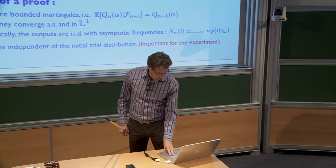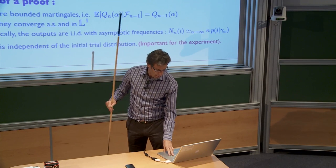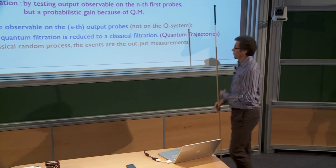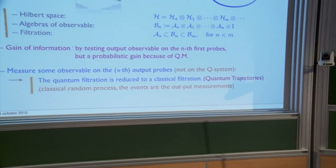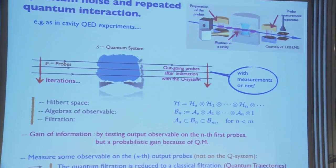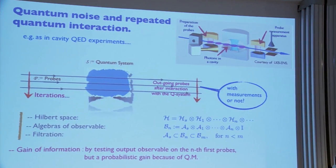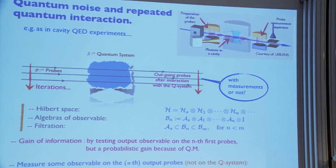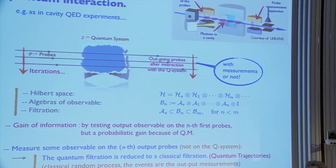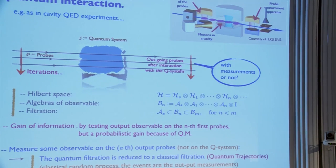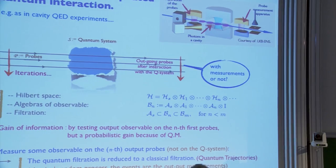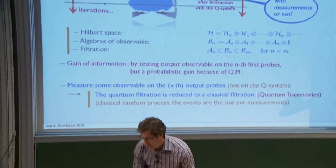One important subtlety: the proof I described assumes starting with the true Q0, but experimentally you don't know Q0. What you can prove is that if you do the same updating with a different Q0 but using the same realization of measurement outputs, you converge to the same target at the same speed — independent of the initial value Q0. This explains the experiment: initially your estimated distribution has nothing to do with what's inside the cavity, but by the end they agree.